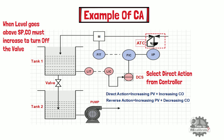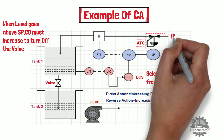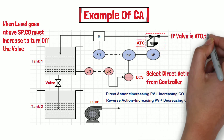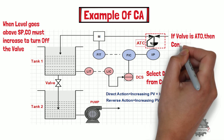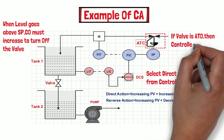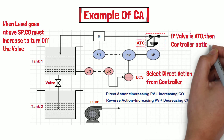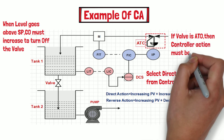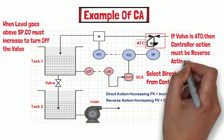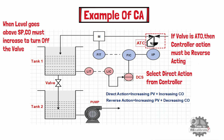Now let's assume that we have used an air-to-open control valve in this example instead of air-to-close. In this case, when the level of tank 1 goes above set point, to correct the error the controller output must decrease to turn off the flow in tank 1. Hence, reverse action needs to be selected from the controller.